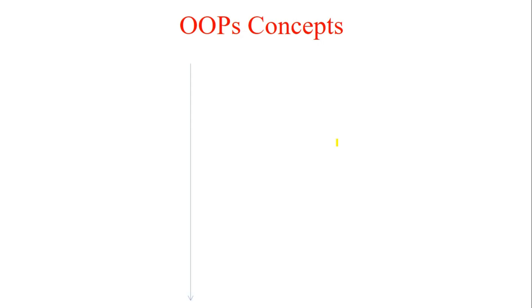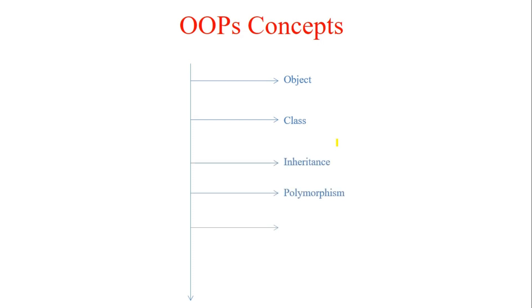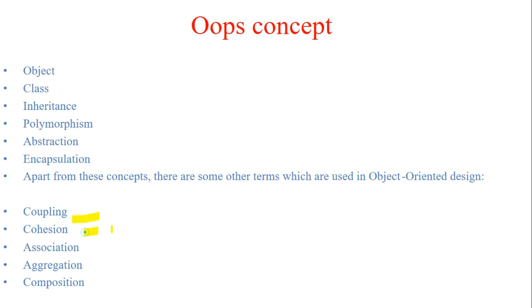The object-oriented concepts we have are: first, object; second, class; third, inheritance; fourth, polymorphism; fifth, abstraction; and sixth, encapsulation. There are a few others as well — for example, coupling, cohesion, association, aggregation, and composition — which I will cover in later videos.